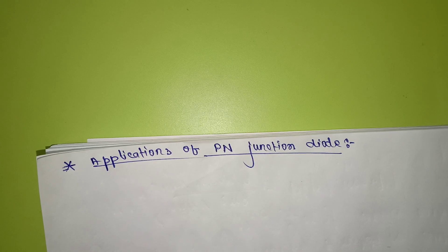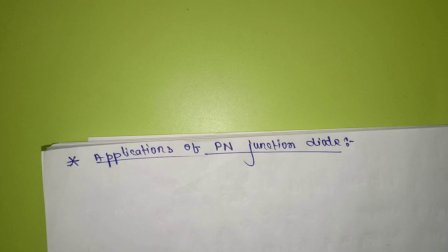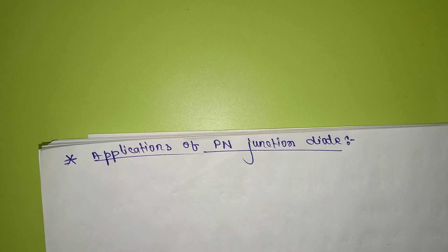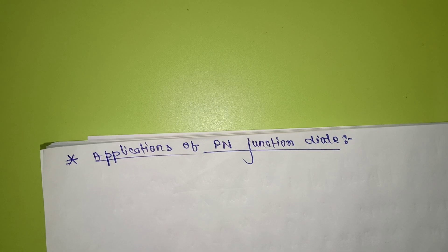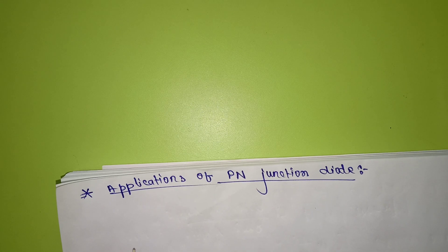Hi friends, today I am going to discuss the applications of PN junction diode. Before going to the applications, I would like to tell the definition of diode. A diode is a semiconductor device through which current can pass freely only in one direction. That device is called the PN junction diode.